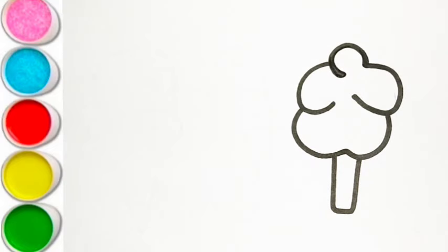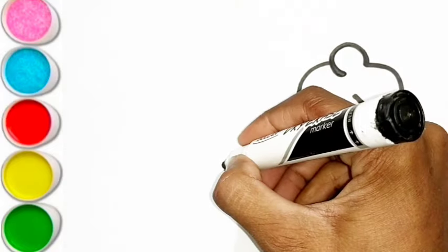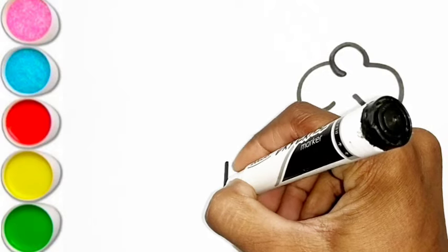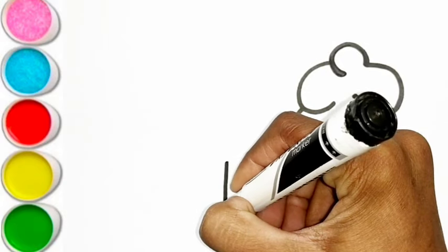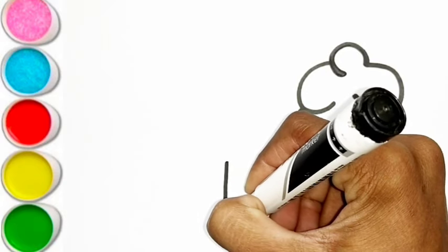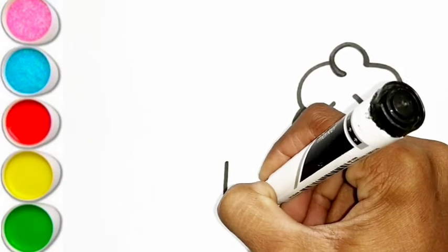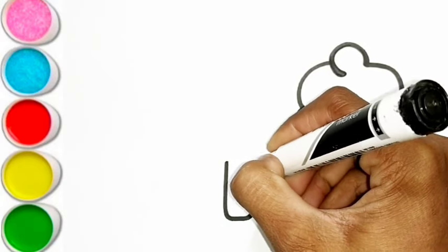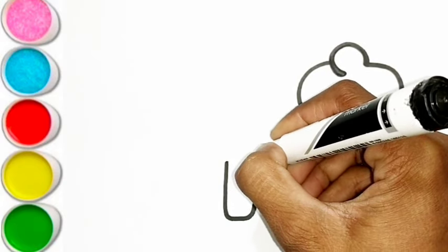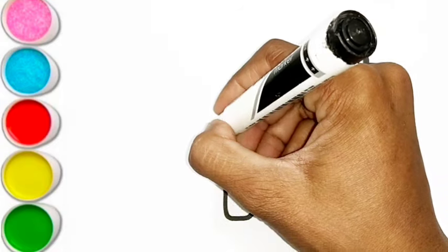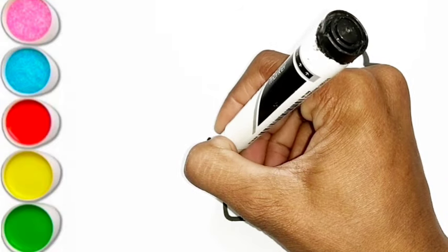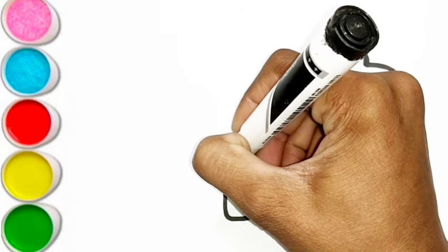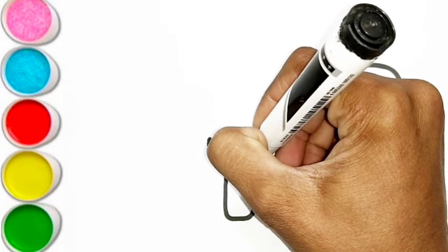J is for jump. J, j, jump. K is for kangaroo. K, k, kangaroo. L is for lion. L, l, lion.